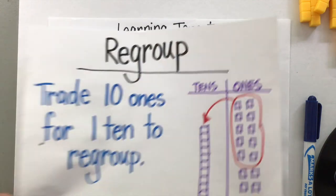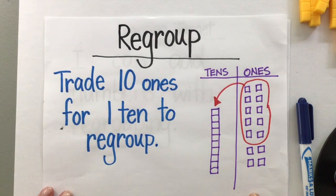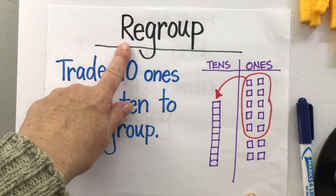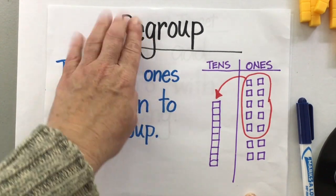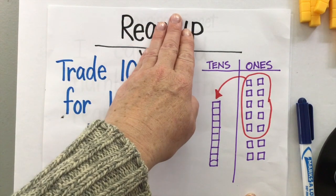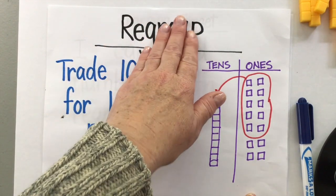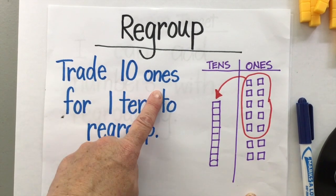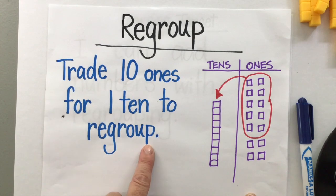Let's go back to a couple weeks ago when we first started talking about the idea of regrouping. The word regroup means that you're going to make a group again. You're going to group again. So when we regroup, we trade 10 ones for one 10 to regroup.